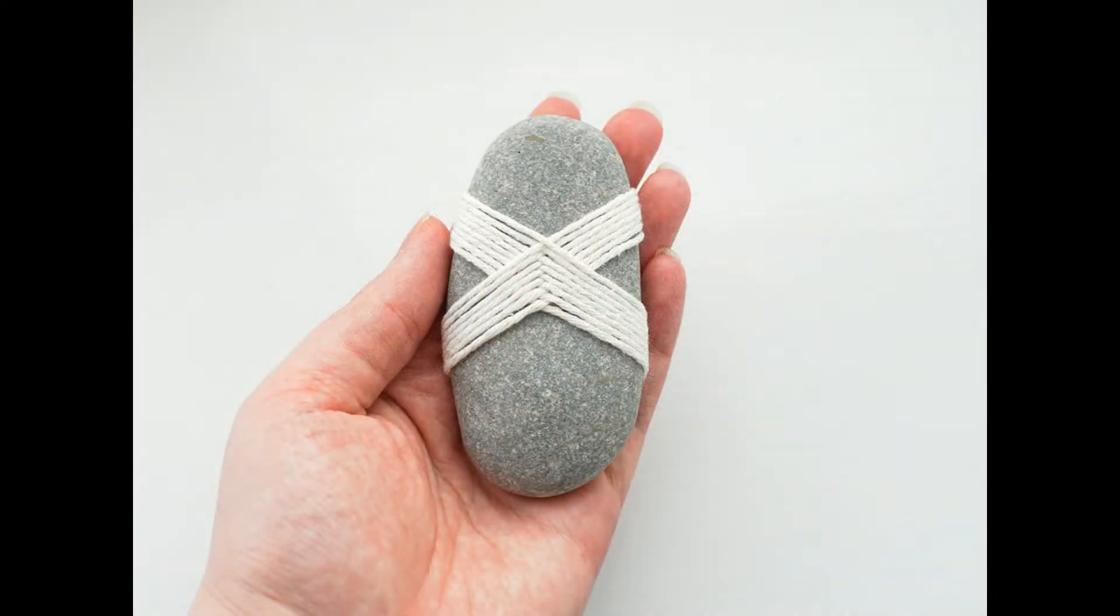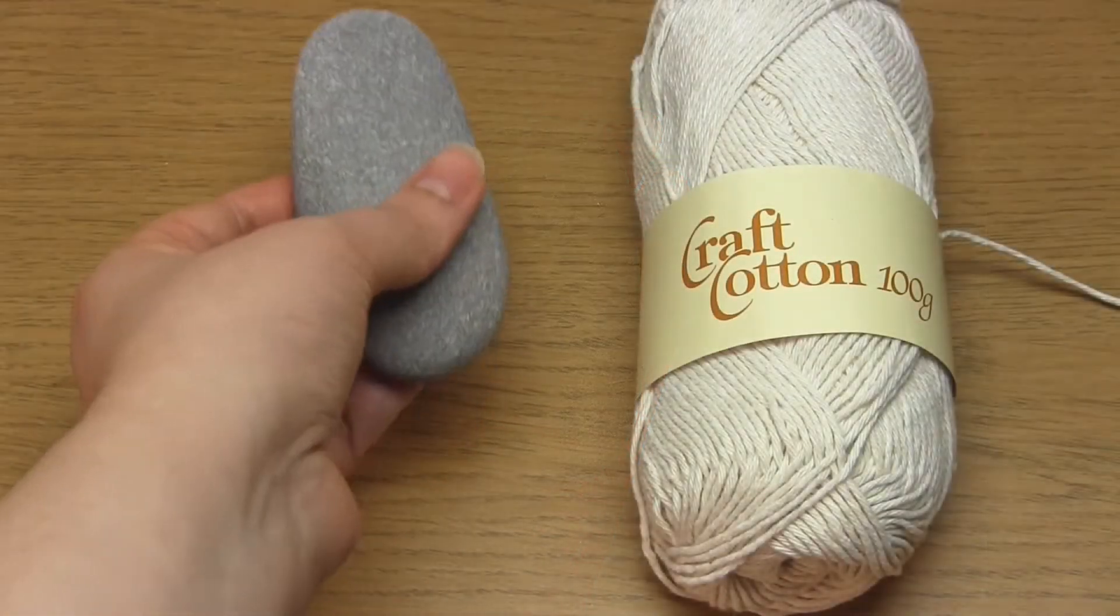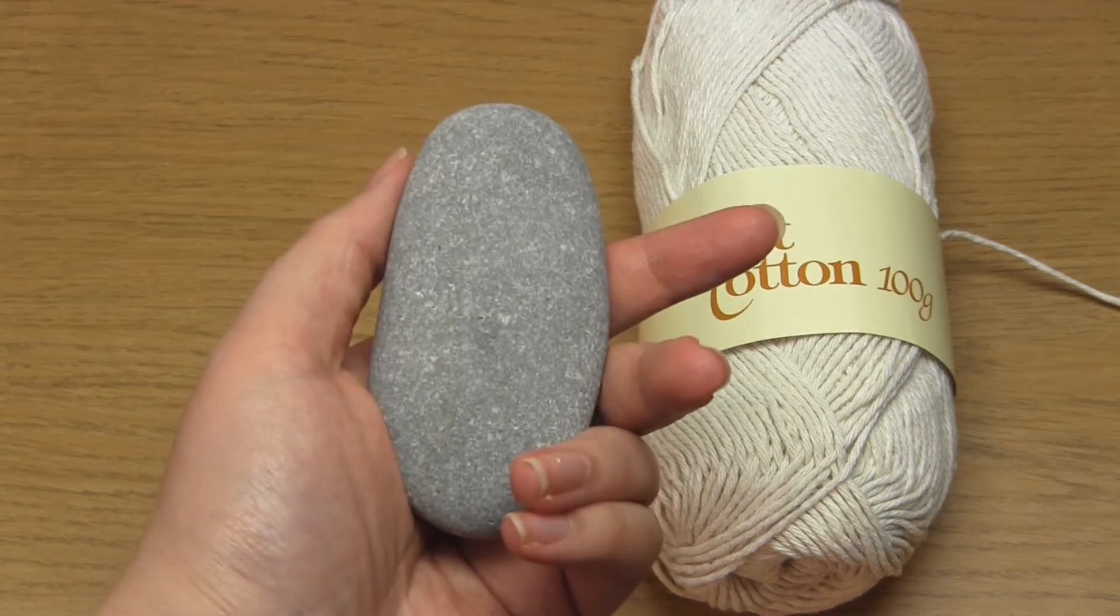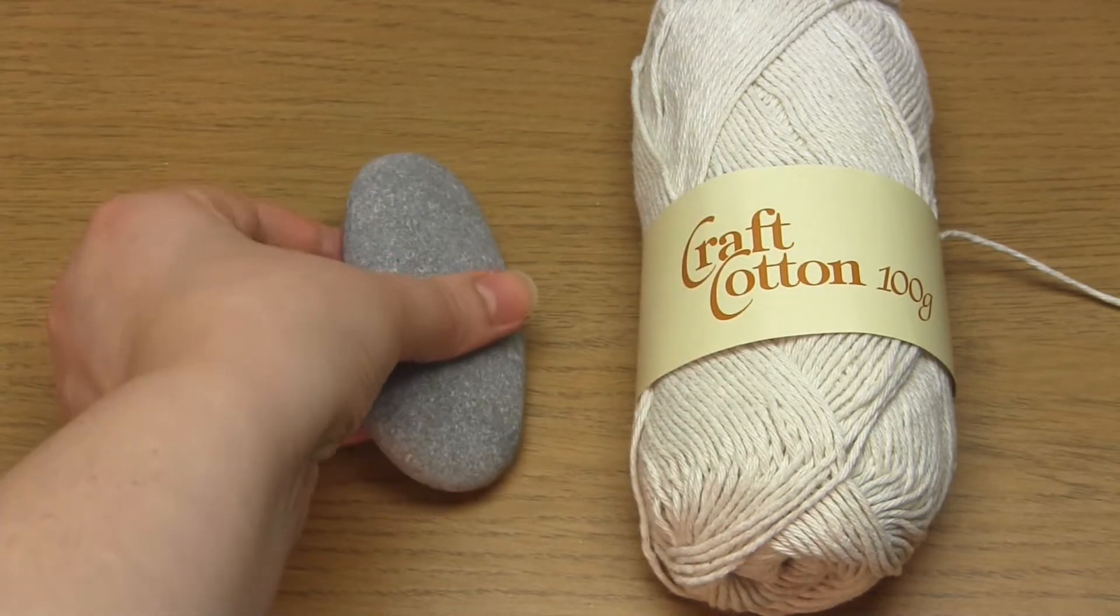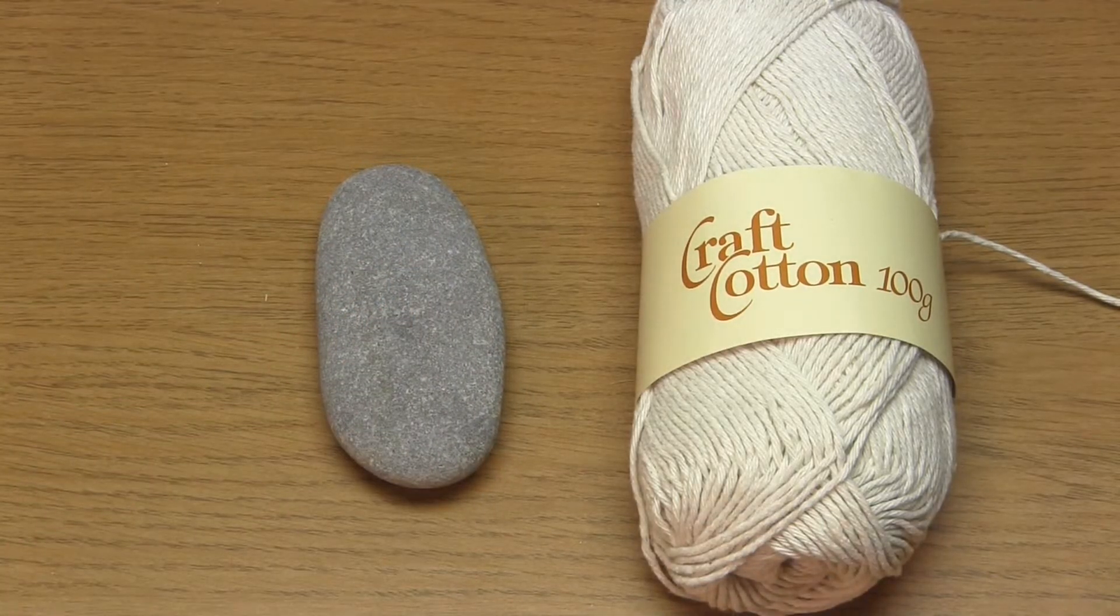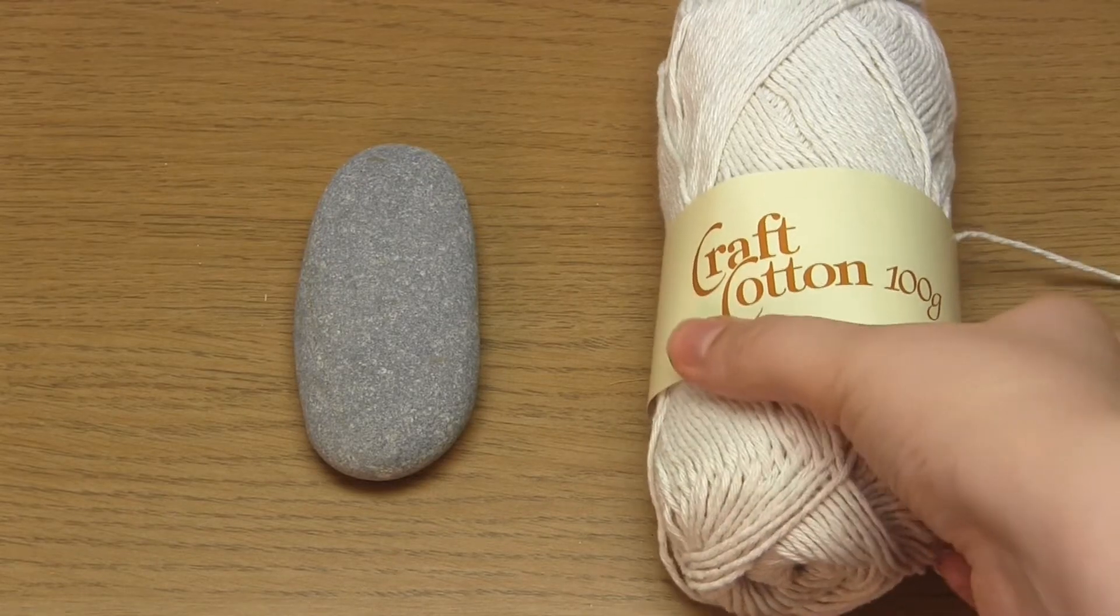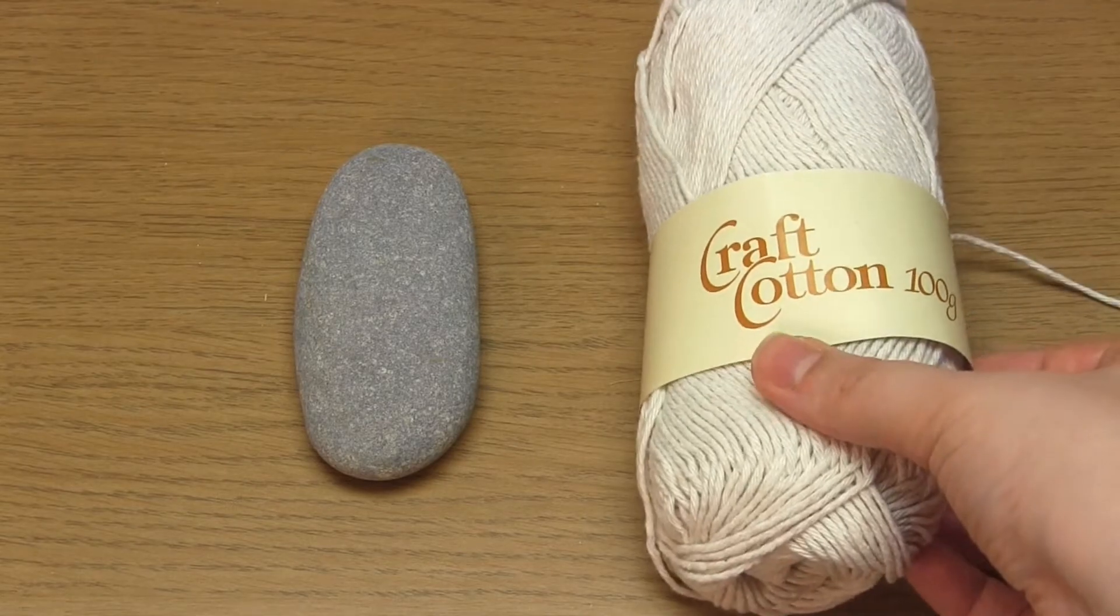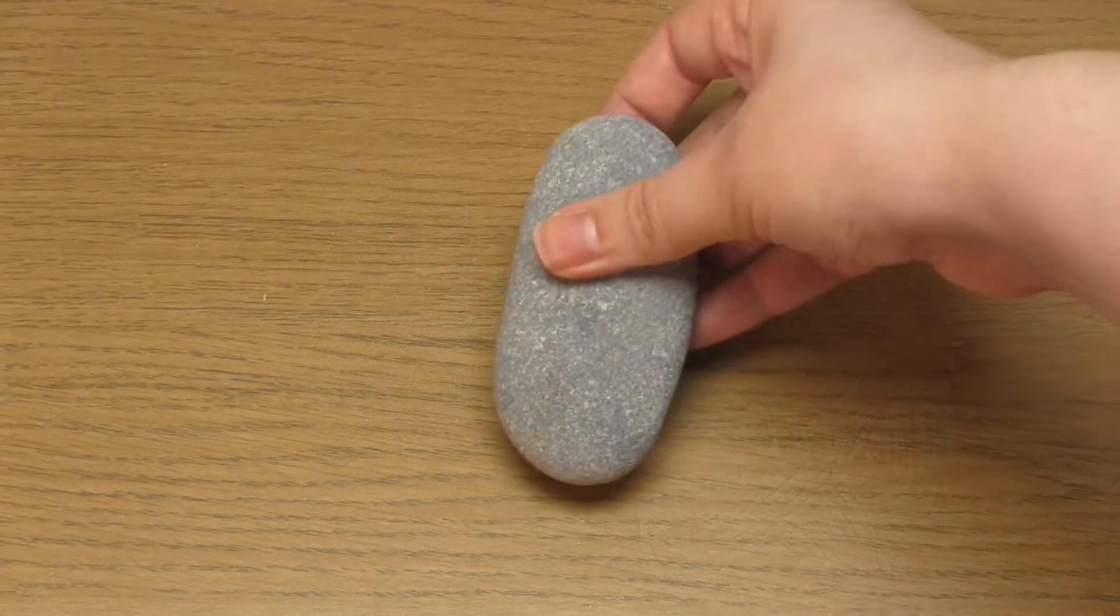In order to follow along you're going to need some yarn, a pebble, a yarn needle and some masking tape. The more symmetrical and flatter the pebble the better and it also helps if the sides are relatively straight. The pebble that I'm using is approximately 9cm long. With regards to the yarn, I used DK weight white cotton yarn. Anything will do but I think medium weight is best or you could use string or a leather cord. Try and choose colours that contrast with the pebble colour.